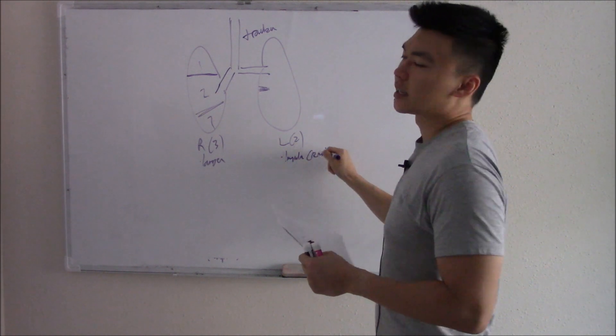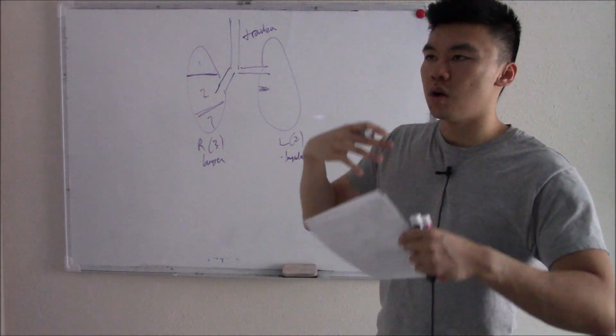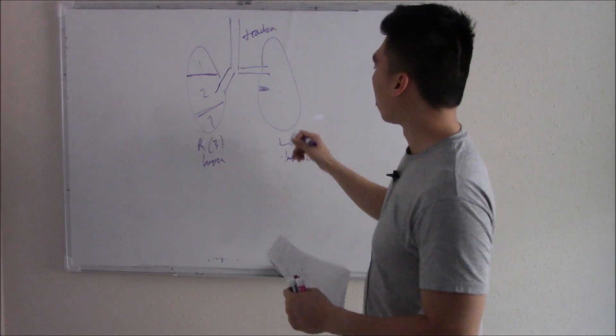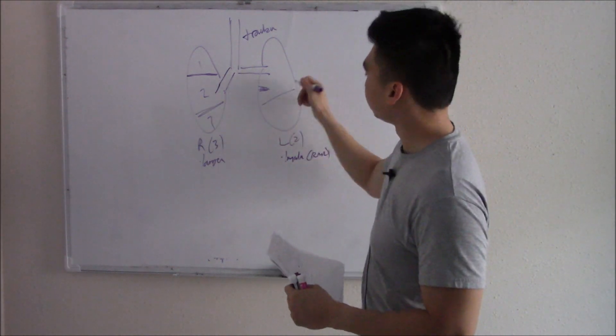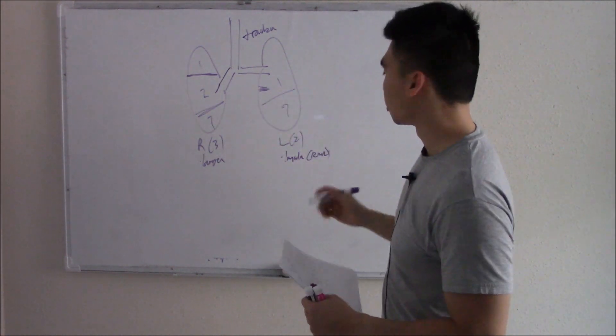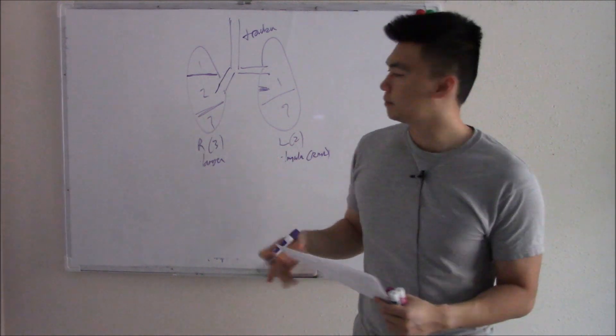The lingula — meaning tongue — is this little tongue-like projection, and it is basically the analog of the right middle lobe. But it doesn't really count as a lobe, so the left lung only has two lobes.